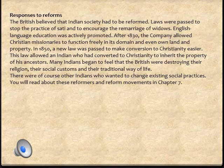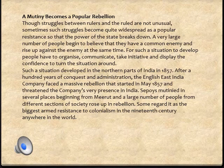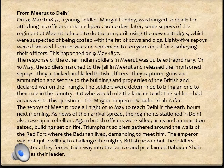The mutiny became a popular rebellion. Because of the Britishers, everyone was suffering — whether kings, queens, sepoys, peasants, or civilians. They decided they had a common enemy and rebelled against them. The Britishers faced the major revolt in 1857, which spread from Meerut to Delhi.